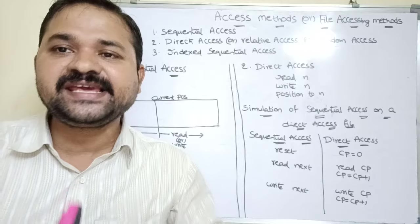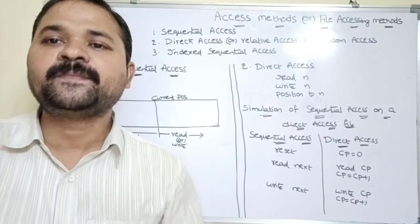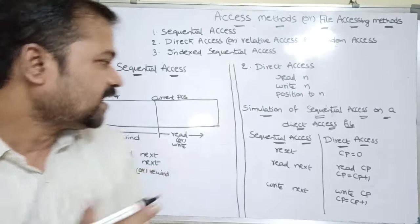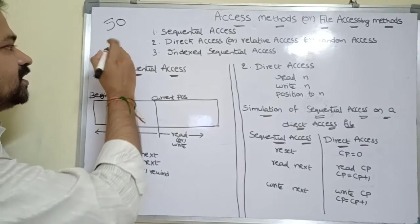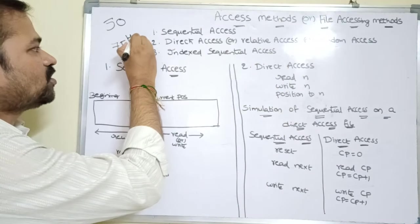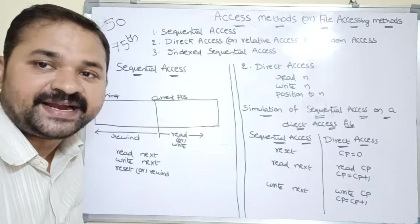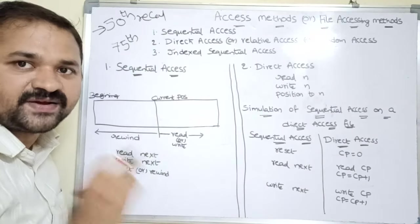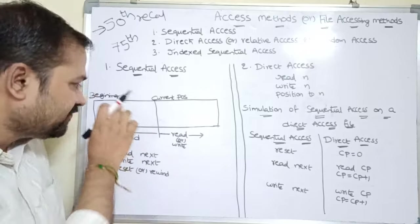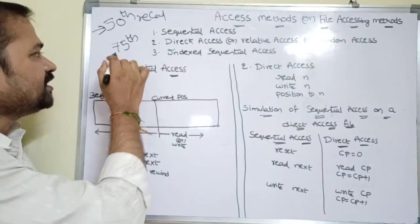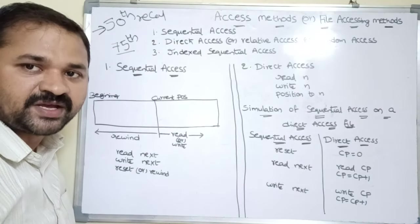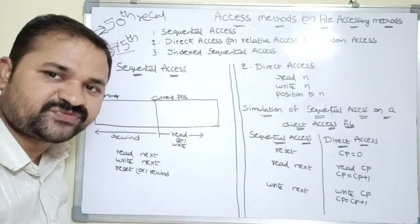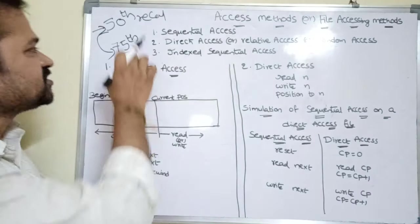In sequential access, the information in the file is accessed in a sequential manner, that is record by record. Let us assume we have a file which contains 100 records. Currently we are at the 50th record and we want to access the 75th record. In order to access the 75th record, we need to access all the records from 50 to 75 — 51, 52, 53, and so on.